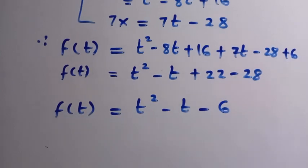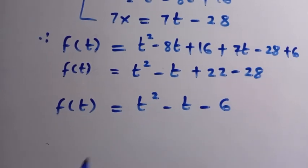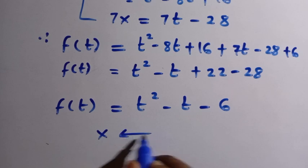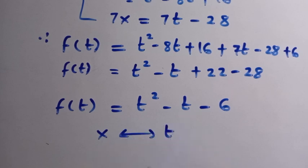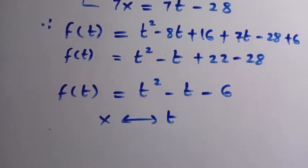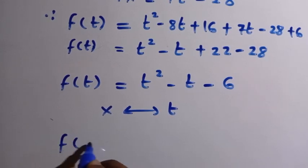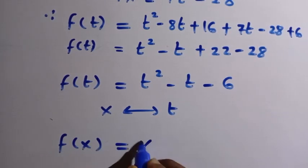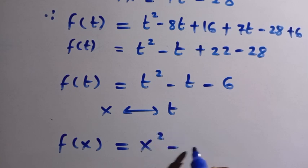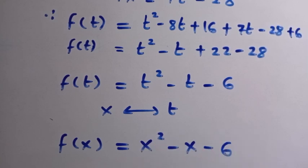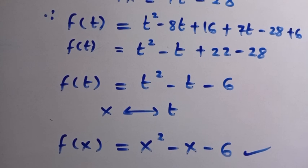Since t and x are both just domain variables, we replace t with x to get f(x) equals x squared minus x minus 6. Both Method 1 and Method 2 give the same answer. Thanks for watching, see you in the next class, and don't forget to subscribe.